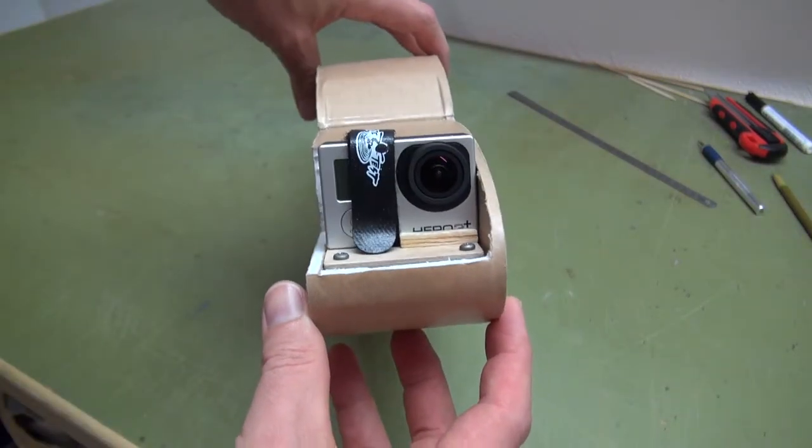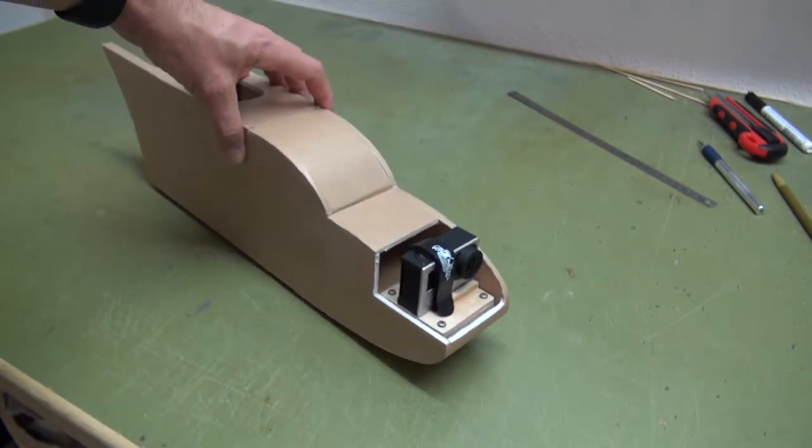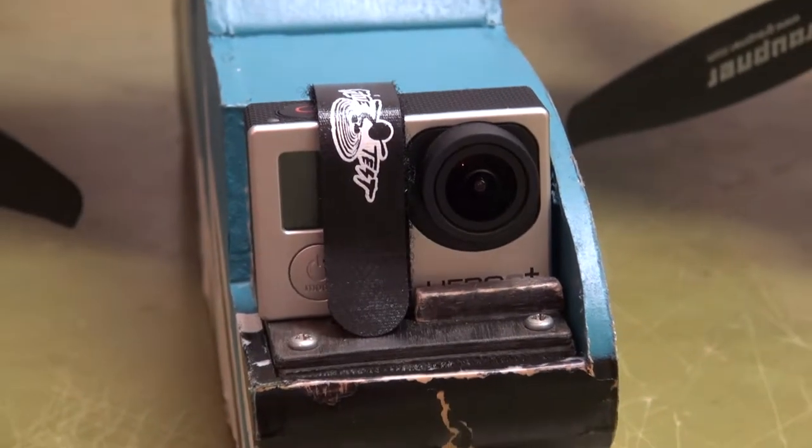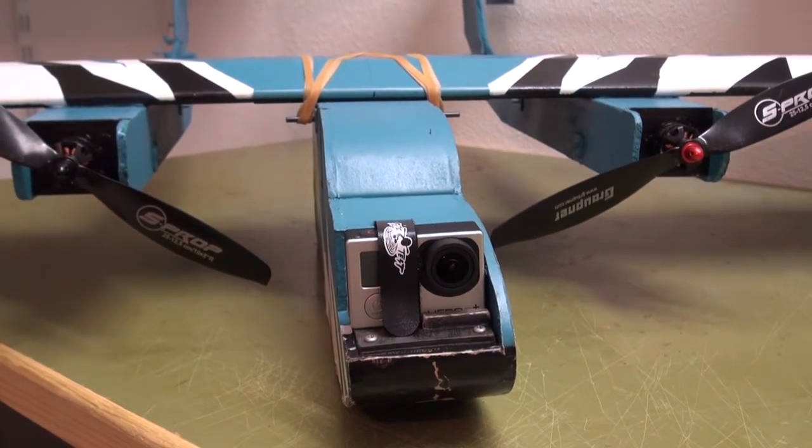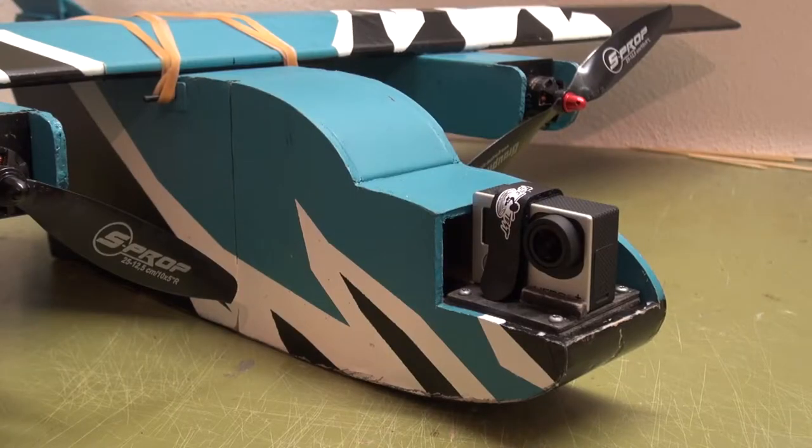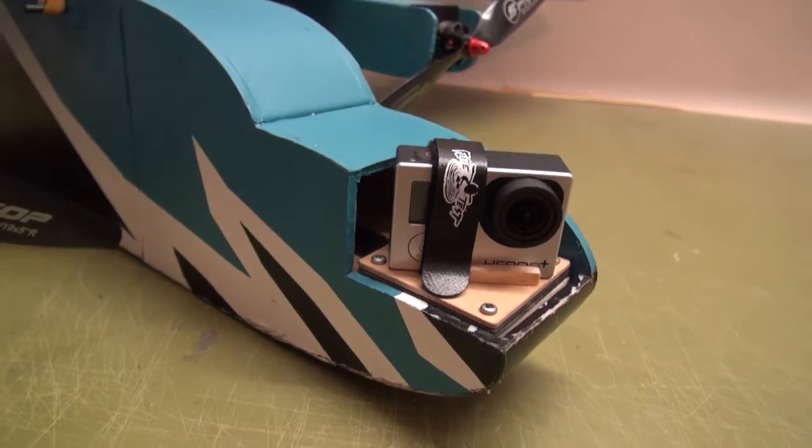There are three possible ways of installing the GoPro in the nose of an FT Bronco: facing forward, facing sideward, or in a tilted position.